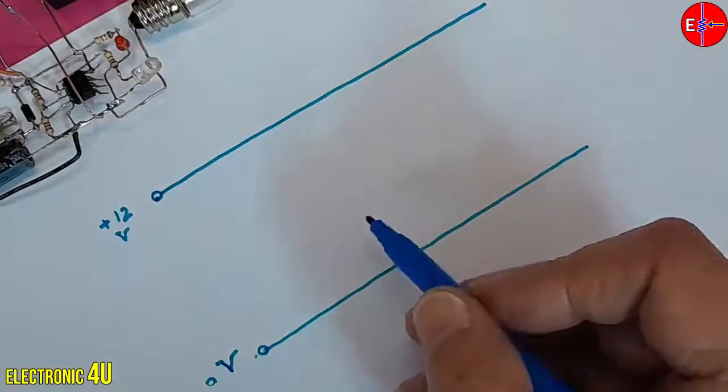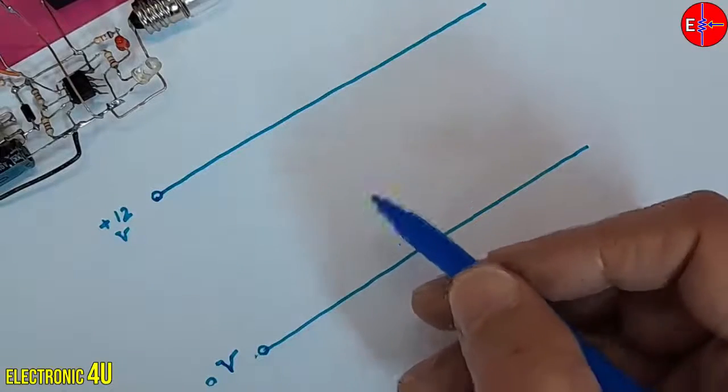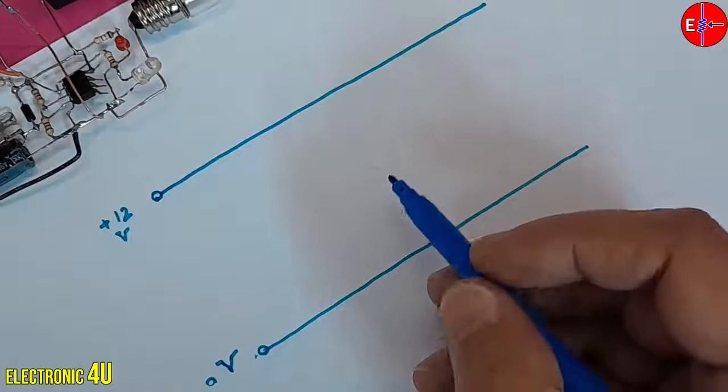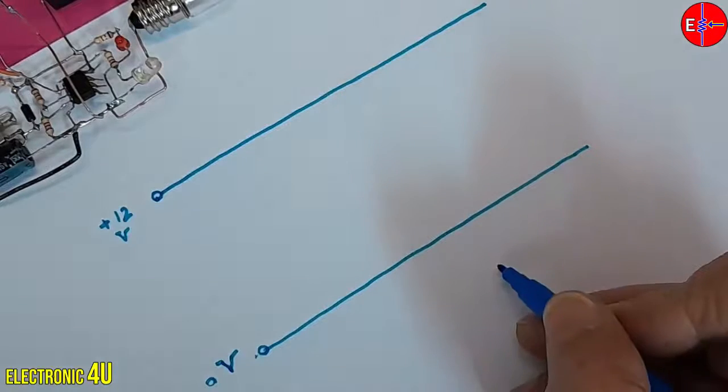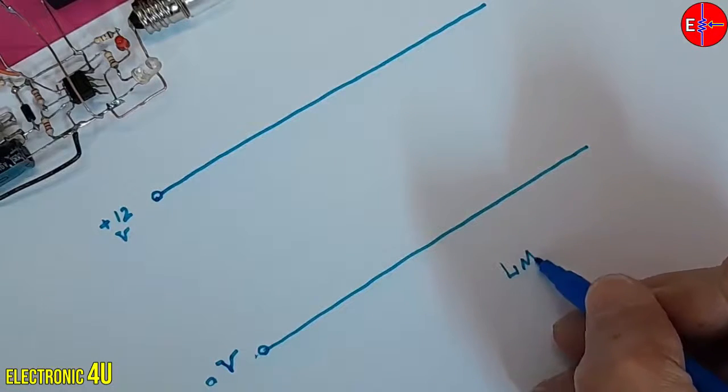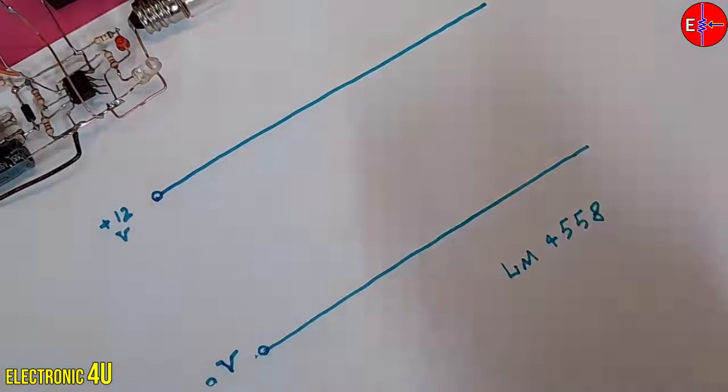We need an op amp IC, represented as a triangle in the schematic. And I am using the LM4558 IC, which has two operational amplifiers, but will only use one.